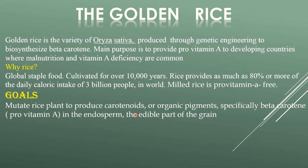Why have we targeted rice only? That is mainly because rice is the global staple food, cultivated for over 10,000 years. Rice provides as much as 80 percent or more of the daily calorie intake of 3 billion people in the world. Milled rice is usually pro-vitamin A free, meaning it doesn't have much pro-vitamin A.